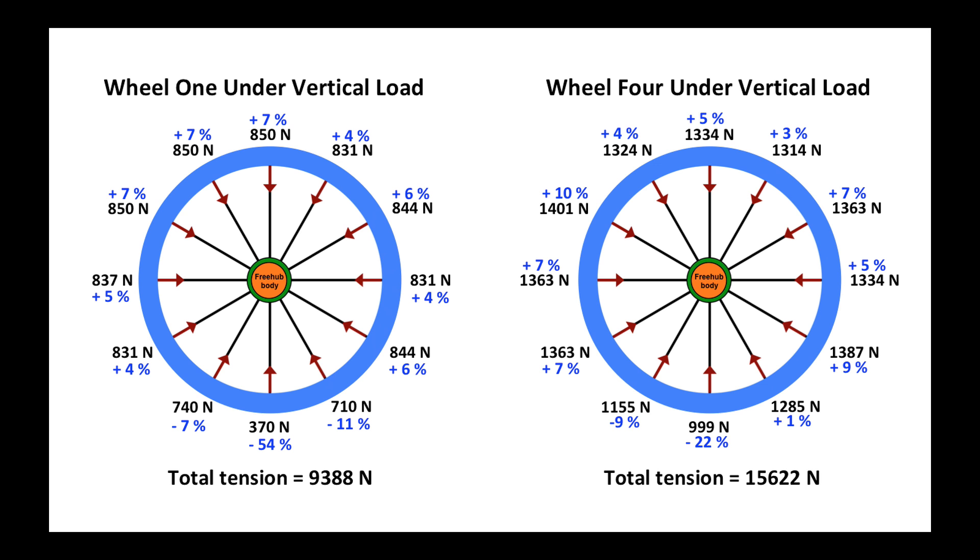Comparing wheel one with wheel four, we can see that wheel four with a much higher starting tension than wheel one has a much smaller percentage reduction of tension as the spokes go through the load bearing zone.